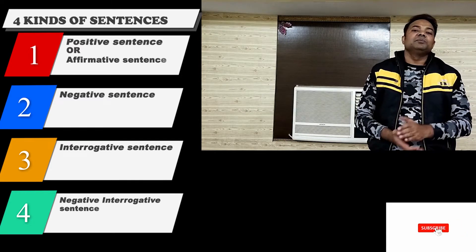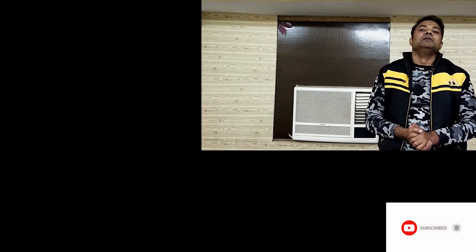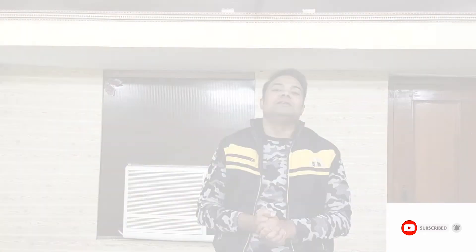Those four kinds of sentences are: positive sentence, negative sentence, interrogative sentence, and negative interrogative sentence. A positive sentence is also known as an affirmative sentence. In some grammar books only three kinds of sentences are mentioned — positive, negative, and interrogative — where the interrogative category covers both interrogative and negative interrogative collectively. So with this detail of tenses, the video has come to an end. I hope you liked the video — please like and subscribe to my channel and see you soon.